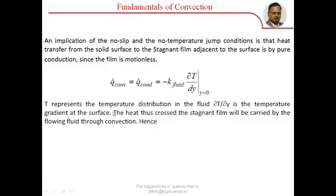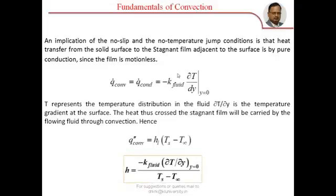Equating the two expressions, you will get: H = −k_fluid (∂T/∂y) at y = 0, divided by (T_s − T_∞). This is the fundamental method to determine the convective heat transfer coefficient in any convection problem.